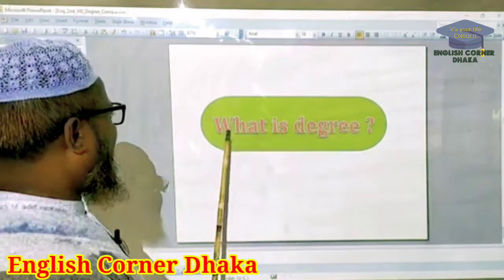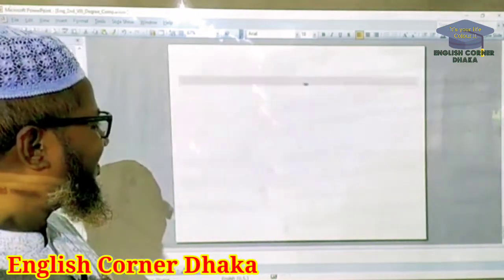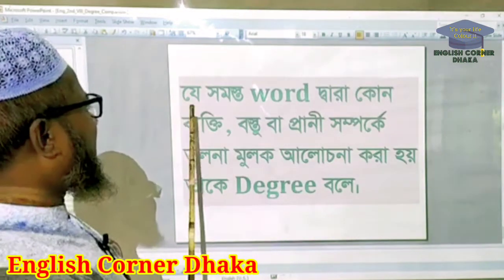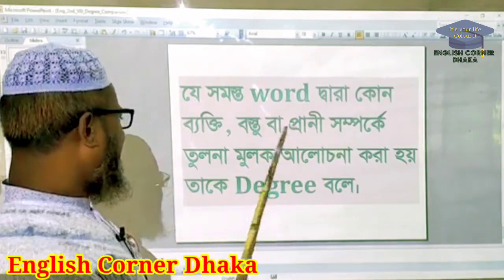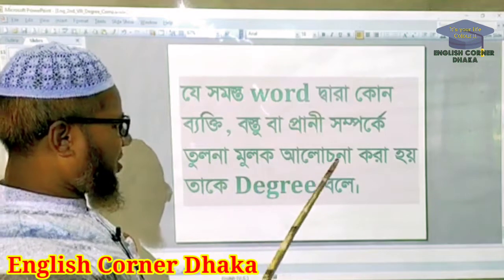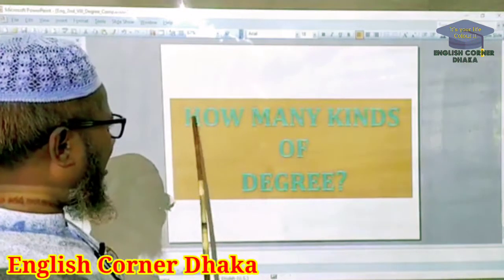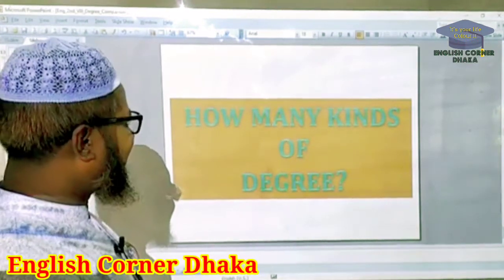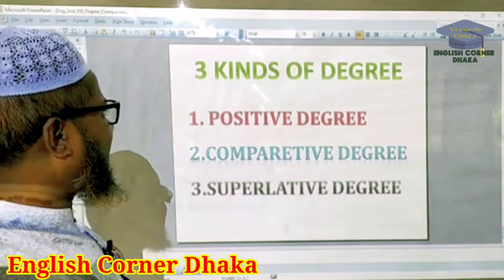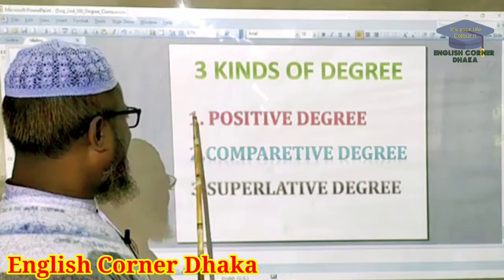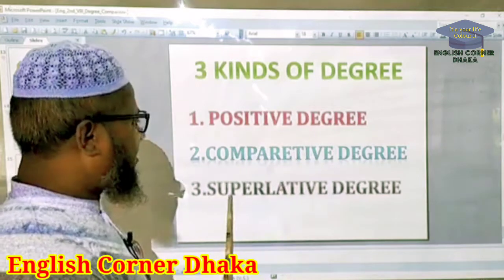Now, what is a degree? There are three kinds of degrees: positive degree, comparative degree, and superlative degree.